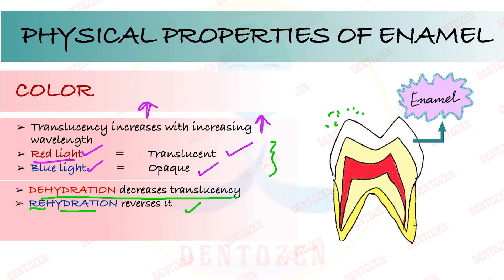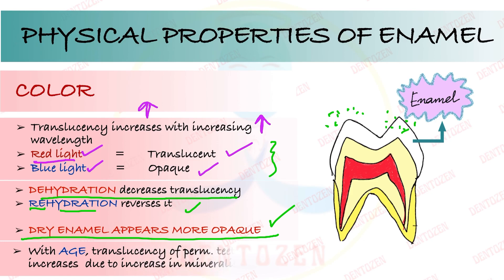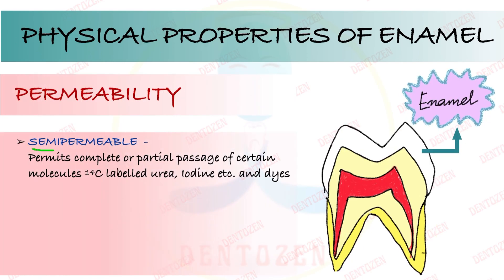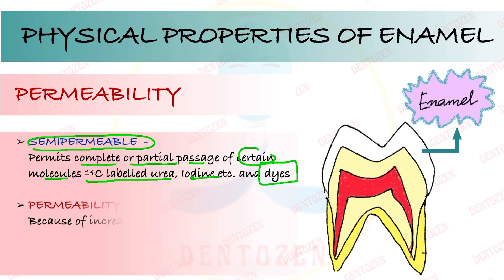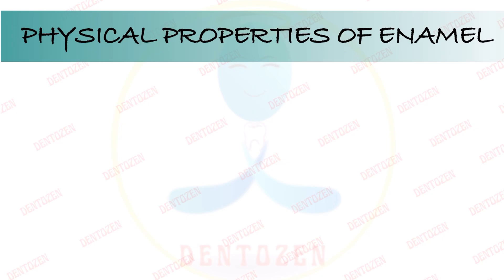Dry enamel appears more opaque. With an increase in age, mineralization will increase, so translucency will also increase. Now, permeability: with radioactive tracer element studies it has been seen that enamel acts as a semi-permeable membrane, permitting complete or partial passage of certain molecules such as carbon-labeled urea, iodine, and some dyes. Its permeability decreases with age because its mineralization increases with age.